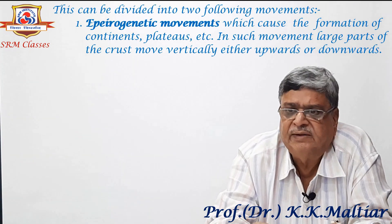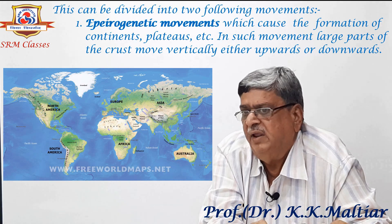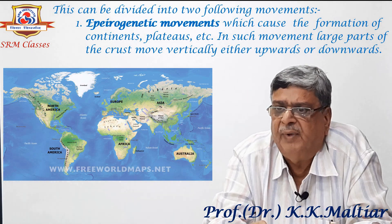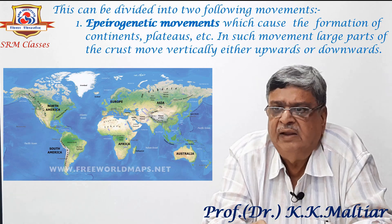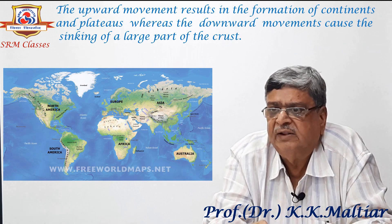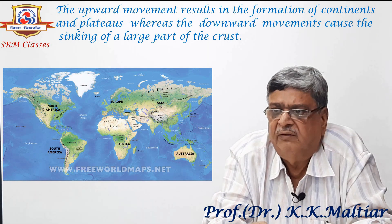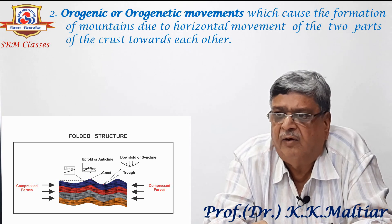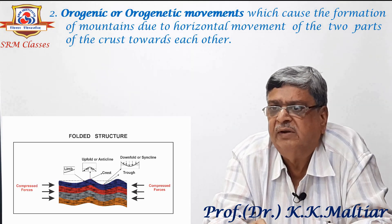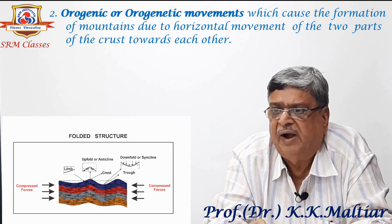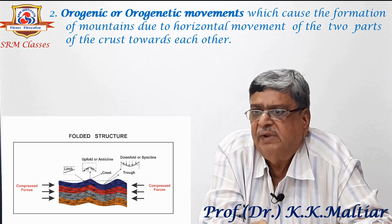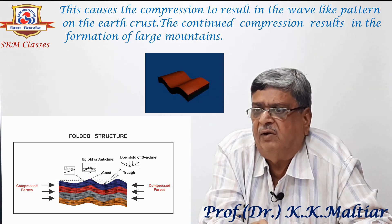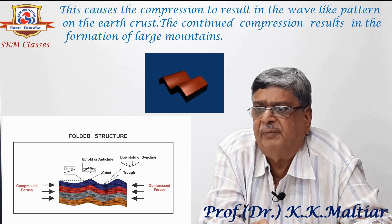This can be divided into the following movements. Number one, epeirogenetic movements, which cause the formation of continents, plateaus, etc. In such movements, large parts of the crust move vertically either upwards or downwards. The upward movement results in the formation of continents and plateaus, whereas the downward movements cause the sinking of a large part of the crust. Number two, orogenic movement, which causes the formation of mountains due to horizontal movement of two parts of the crust towards each other. This causes compression resulting in a wave-like pattern on the crust, and the continued compression results in the formation of large mountains.